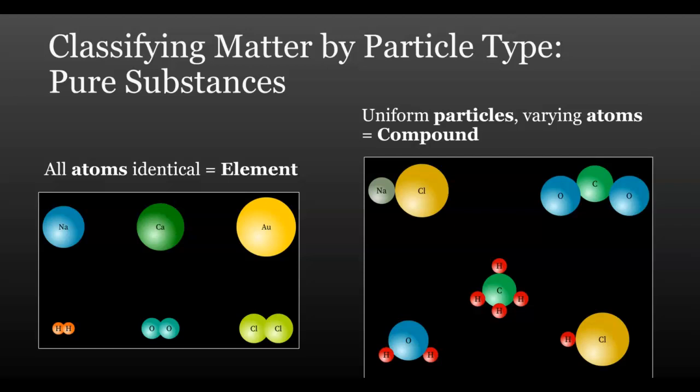There are a handful of elements whose atoms are too reactive to be found by themselves in nature, and these are called the molecular elements. Hydrogen, oxygen, and chlorine are a few of these, and as you can see, their molecules contain two identical atoms chemically bound together.